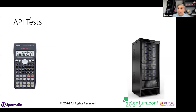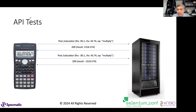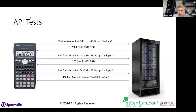From an API testing point of view, what kinds of tests would you consider? I might send 30.1 and 43.74 with multiply and expect a 200 response with the correct result — that's what I'd assert. I'd also store the result to use later. I'd also test negative numbers to confirm they're handled correctly.